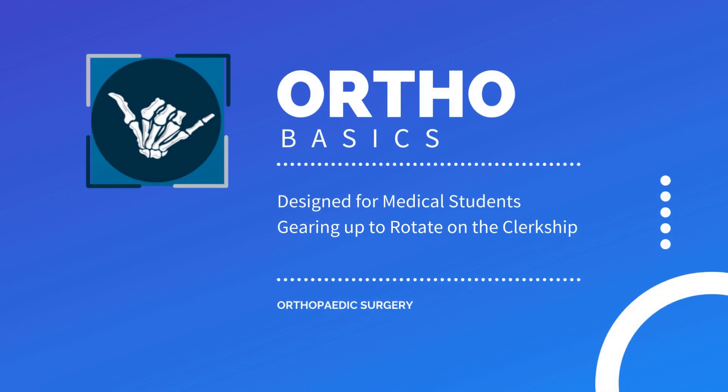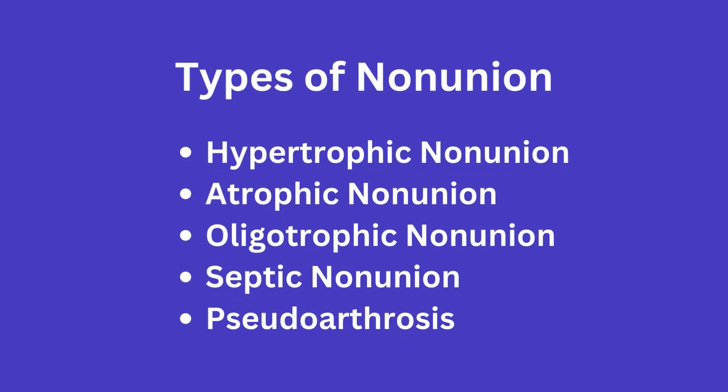Today we will go over the different types of non-union that you are bound to hear talked about, or may even find yourself asked to name and explain while on rotation. A non-union in its simplest form is when there is a halt in the fracture repair process that, without intervention, will not go on to heal. This can be secondary to a multitude of factors which we will go over today. There are five types that I will cover to help you better understand the lingo surrounding non-unions on rotation.